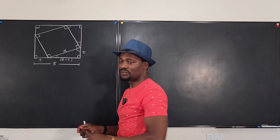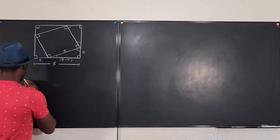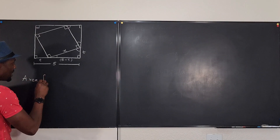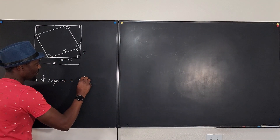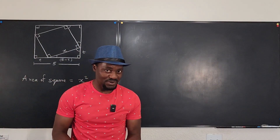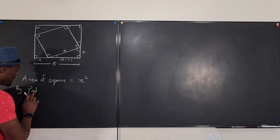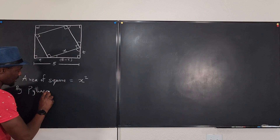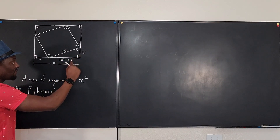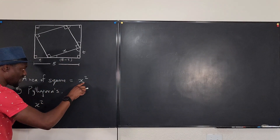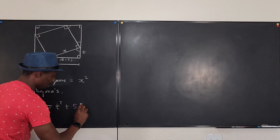Now we're ready, because we can connect all three sides of the triangle. The area we're looking for is the area of the inner square, which is x squared. By the Pythagorean theorem, x squared equals t squared plus (five minus t) squared.